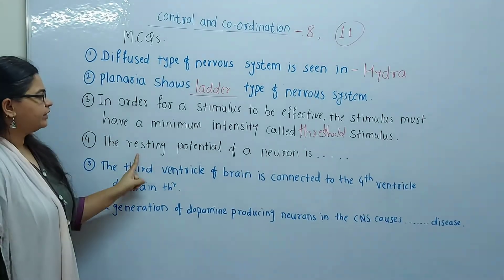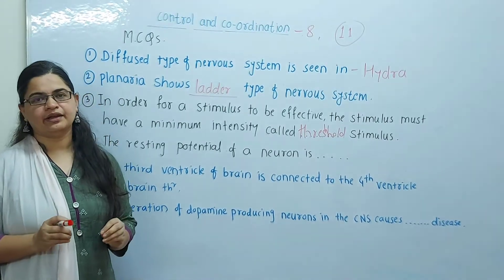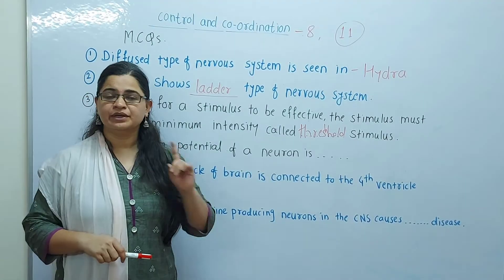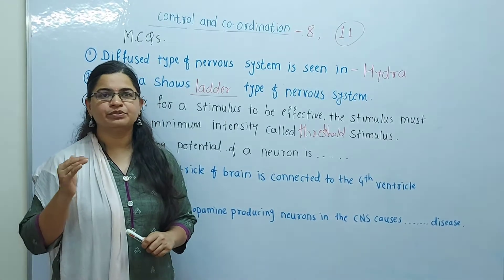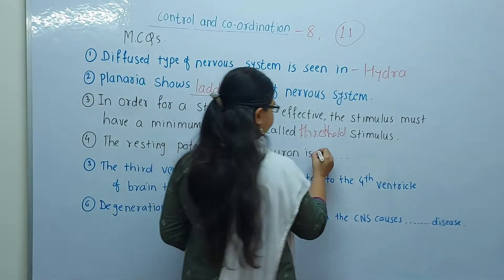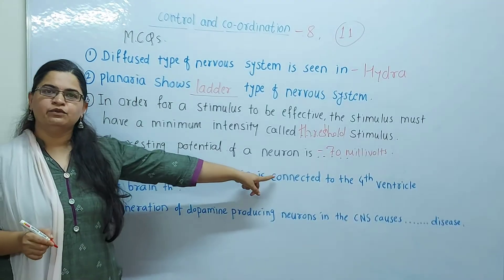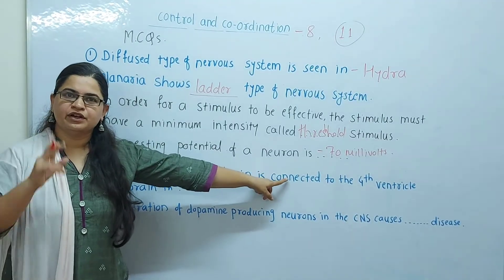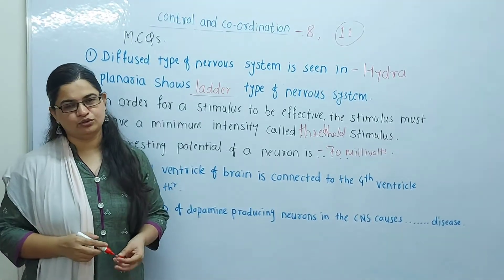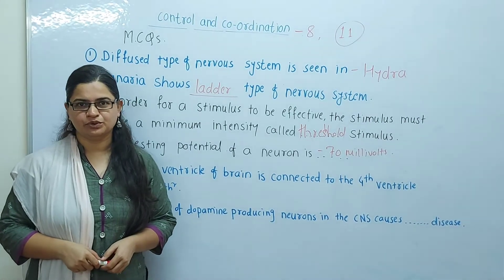The resting potential of a neuron — what is the resting potential of a neuron in its resting situation? You should remember that it has to be minus 70 millivolts. This is minus 70 millivolts, because this question is equally important. These questions have already been asked, so there are good chances of them being asked again.